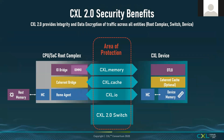Another major CXL 2.0 feature is encryption and security on individual links, modeled after IDE as part of PCIe but enhanced for CXL.mem and CXL.cache. Encryption is link-based — when cycles leave the root port they can be encrypted, and when they enter the end device they are decrypted. Encryption is maintained through the CXL switch as well.